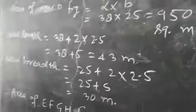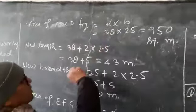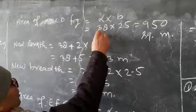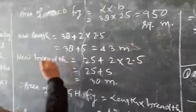Therefore, area of ABCD figure is equal to length into breadth. Therefore, 38 multiplied by 25 which will be equal to 950 square meter.